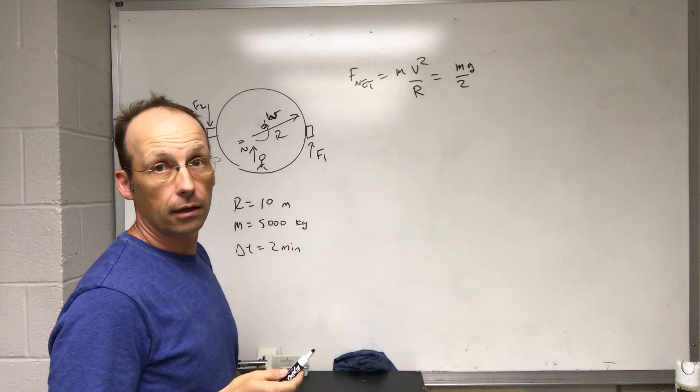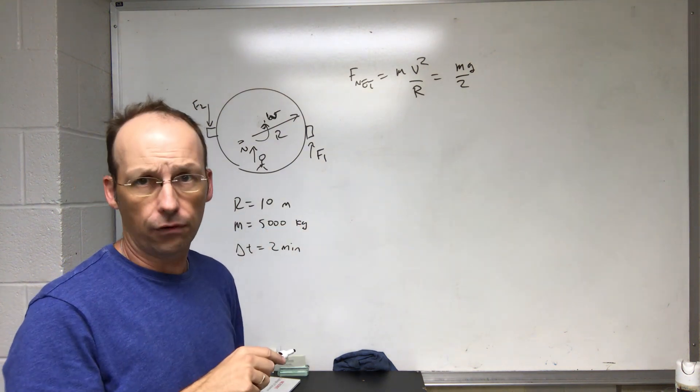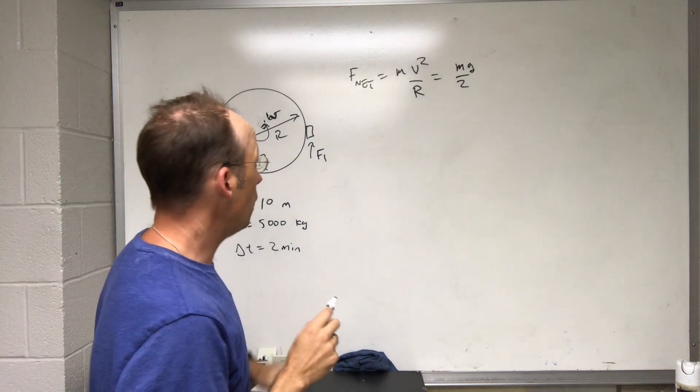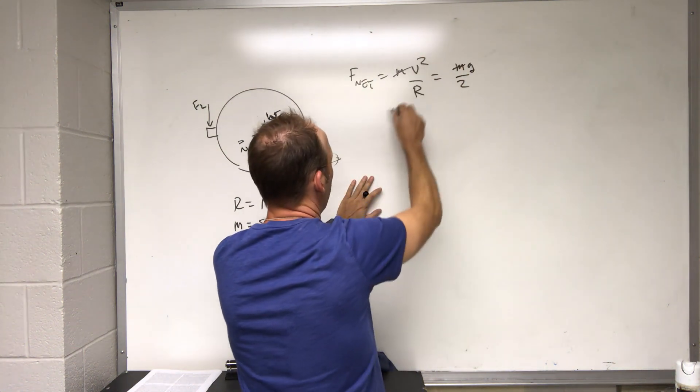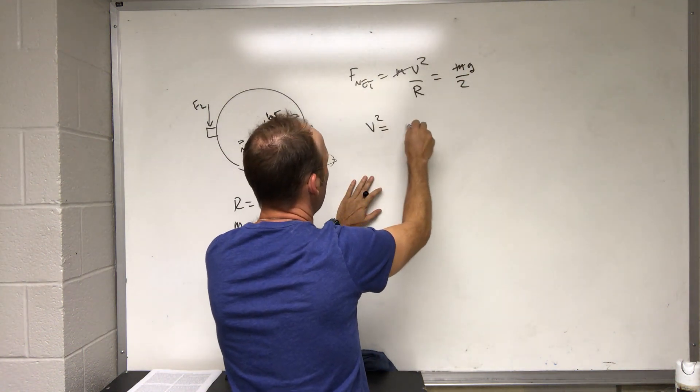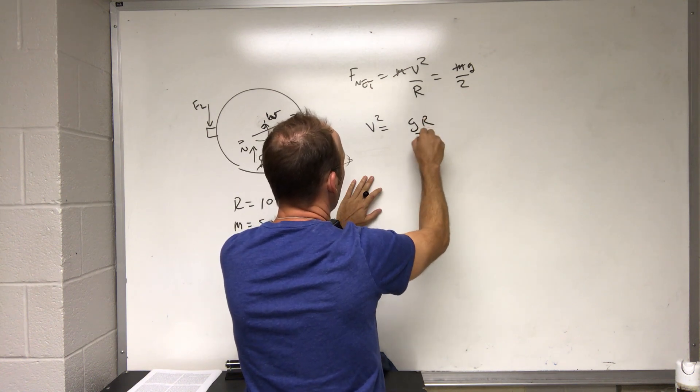I'm going to solve this for the velocity. Right away you can see the masses cancel and I can solve for v squared. V squared equals g r over 2.